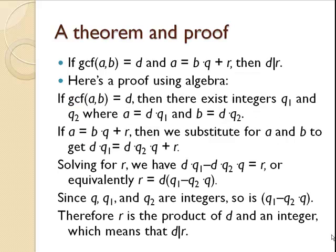Here's a proof using algebra. If the greatest common factor of a and b is d, then we have these integers, q1 and q2, where a is d times q1 and b is d times q2. If a equals b times q plus r, we can substitute for a and b to get d times q1 equals d times q2 times q plus r.